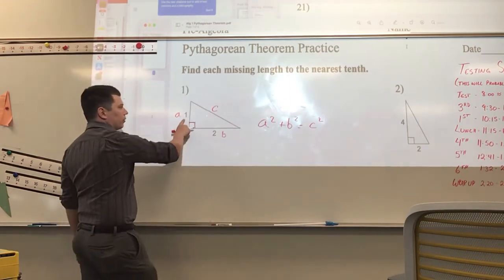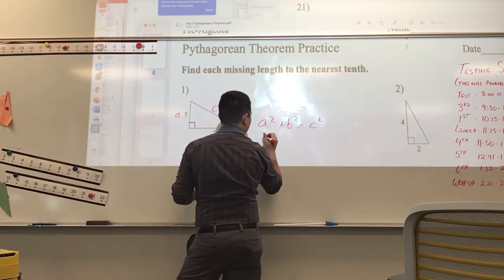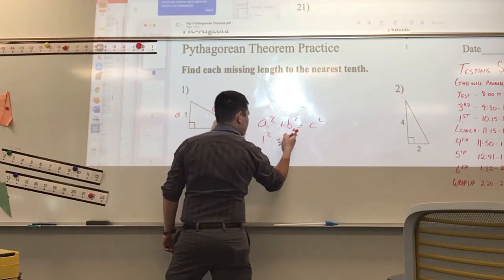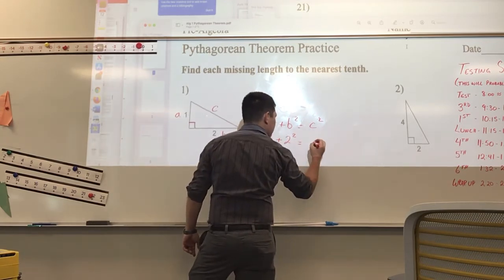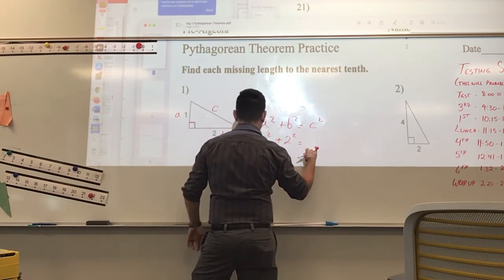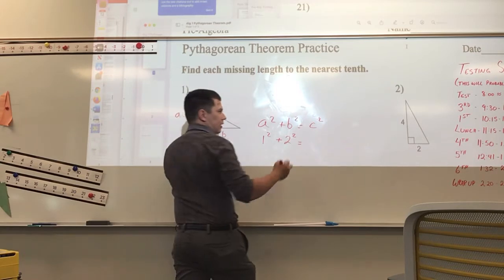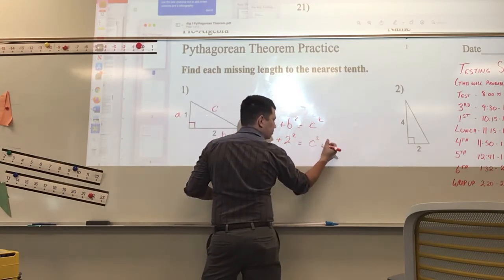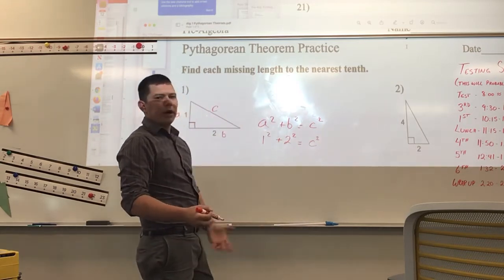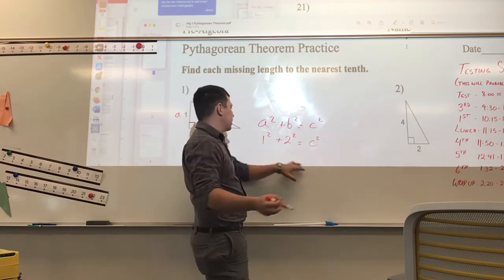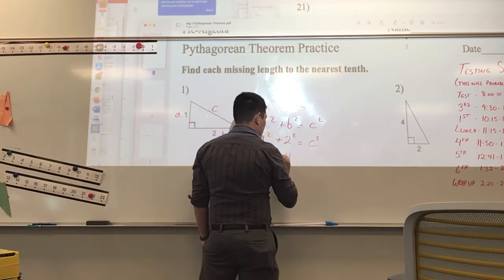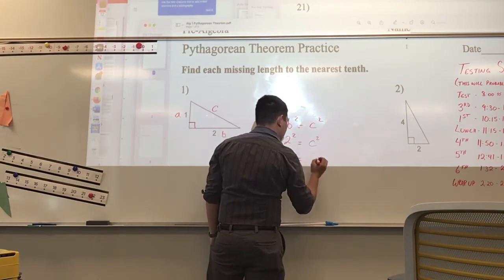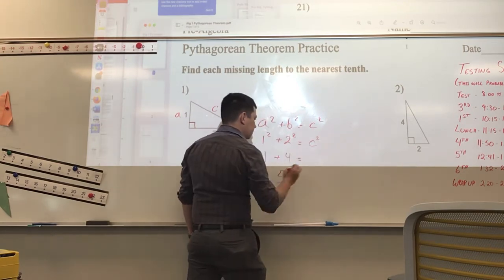Let's go ahead and plug in what we know. A is 1, so we know 1 squared plus B — B is 2 — so 2 squared equals C squared, because that's what we're trying to find. 1 squared is 1, 2 squared is 4, so 1 plus 4 equals 5. So 5 is equal to C squared.